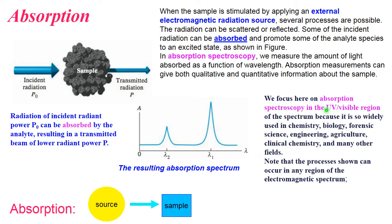We'll focus here on absorption spectroscopy in the UV-visible region. Because it's widely used in chemistry, biology, engineering, agriculture, clinical analysis, and many other fields. But the same processes can occur in any region of the electromagnetic spectrum. So, the simplest device for absorption spectroscopy needs to include the source. And then light is coming to the sample and later is collected.